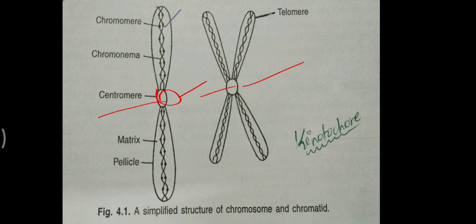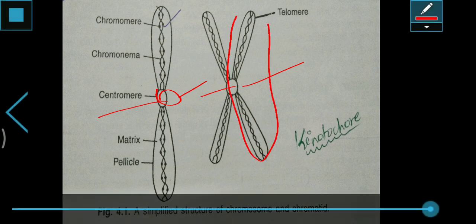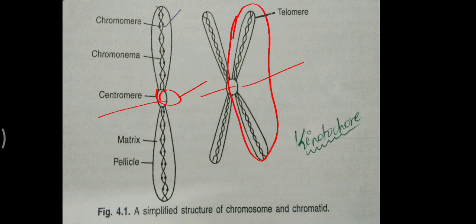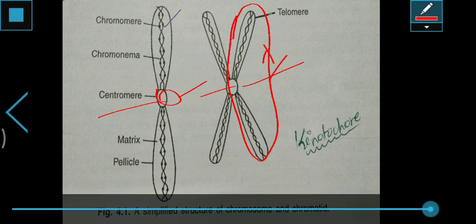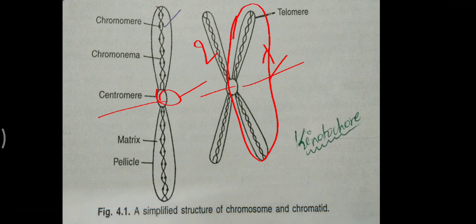Coming to chromatid — what do you mean by chromatid? It is one of the two distinct longitudinal subunits of a chromosome. These are called chromatids. As you can see here, there are two chromatids. There are two types of chromatids: sister chromatids and non-sister chromatids.